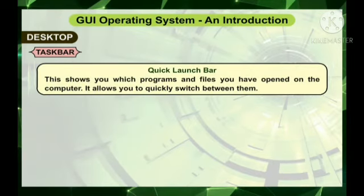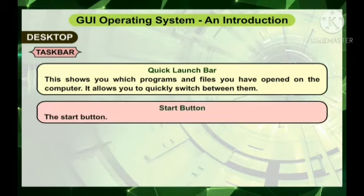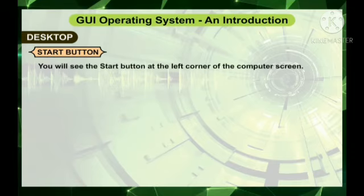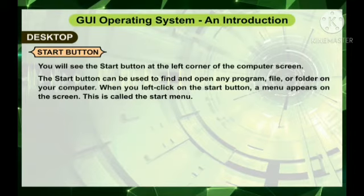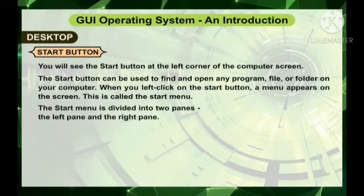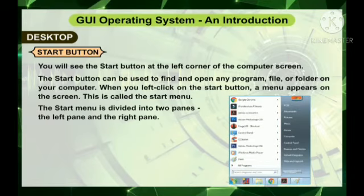The quick launch bar shows you which programs and files you have opened on the computer and allows you to quickly switch between them. The start button is at the left corner of the computer screen. The start button can be used to find and open any program, file, or folder on your computer. When you left-click on the start button, a menu appears on the screen called the start menu. The start menu is divided into two panes: the left pane and the right pane.